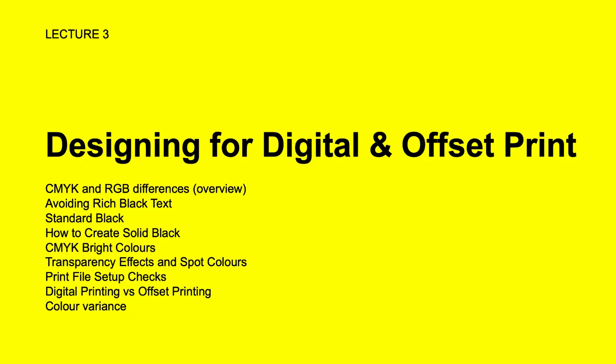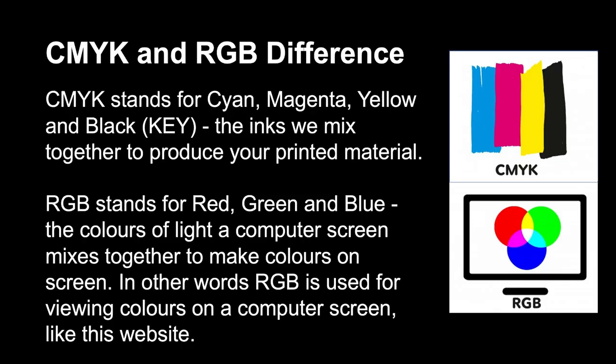We'll also look at bright colors — not many different types from a CMYK perspective, but enough for you to know how to create basic bright color swatches. Then we'll talk about transparency effects and spot colors, look at print file setup checks that differ depending on whether you're doing offset or digital printing, and finally close with color variance. It should take around an hour.